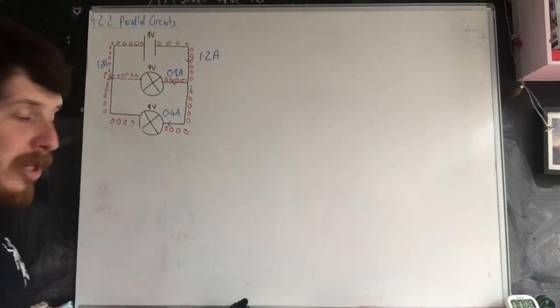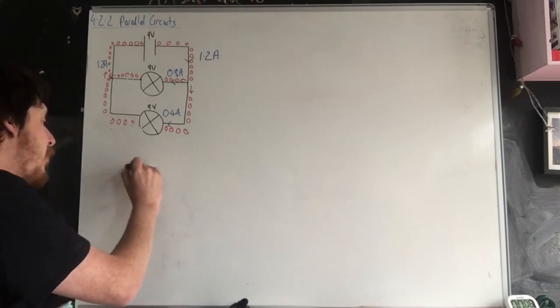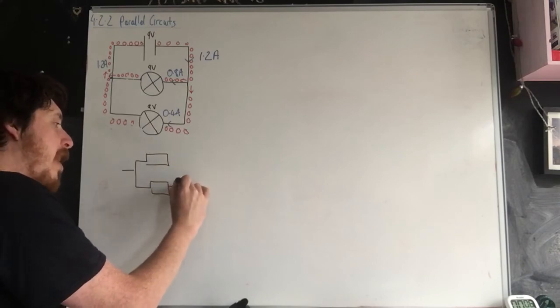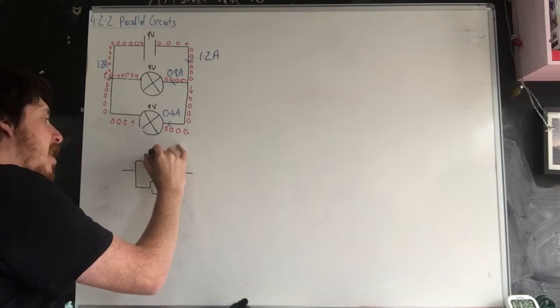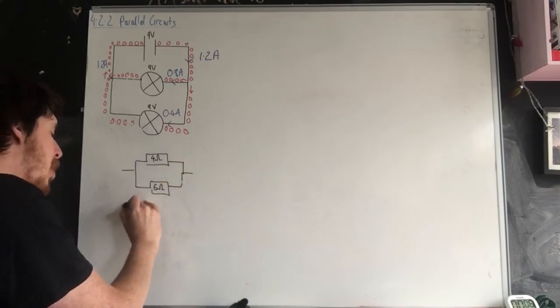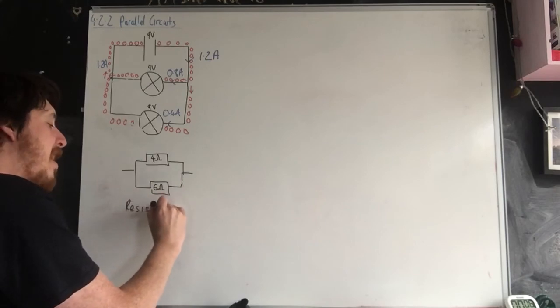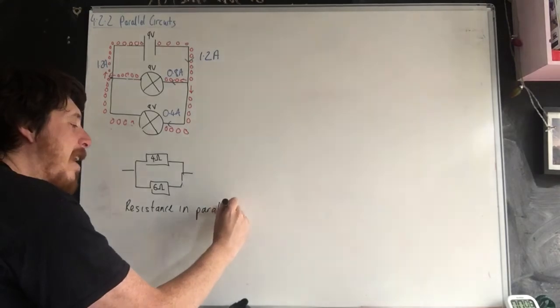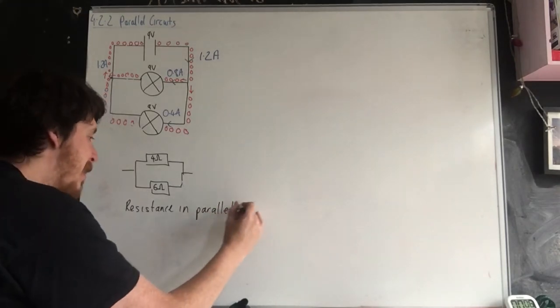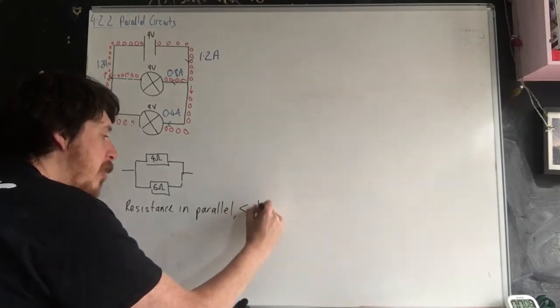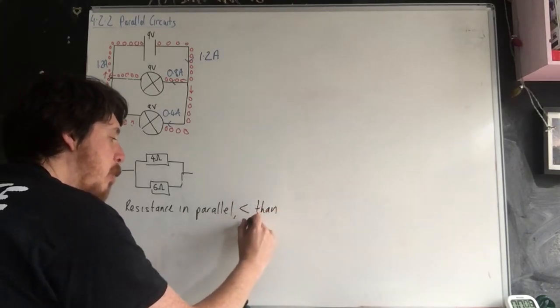Something else that happens is if you put two resistors in parallel. Let's show you here and here for example. So let's say we've got 4 ohms and we've got 6 ohms. Now your resistance in parallel, you don't add them up. What happens is in this case it would be lower than the smallest resistance.